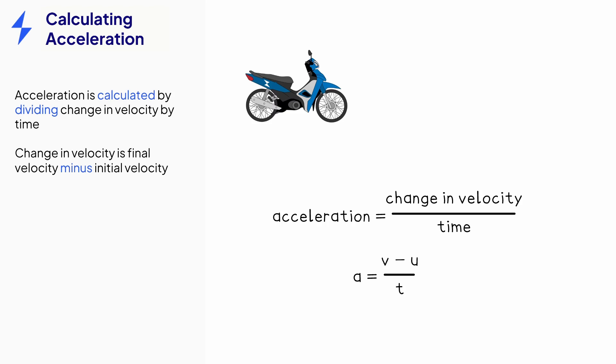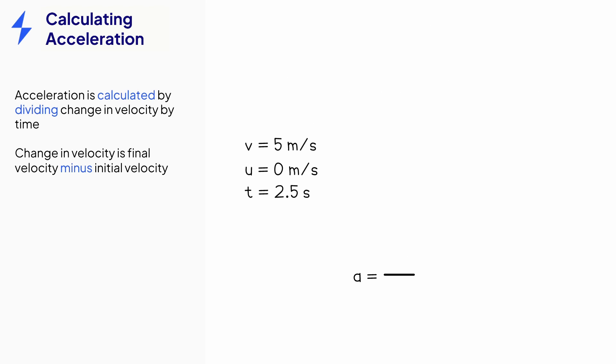As an example, this bike has an initial velocity of zero meters per second and a final velocity of 5 meters per second and it takes 2.5 seconds to move from initial to final velocity. Substitute the values listed into the acceleration equation, making sure to do final velocity minus initial velocity. And that's our acceleration, 2 meters per second squared.